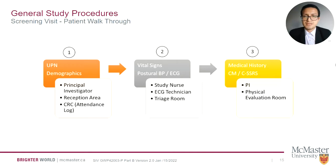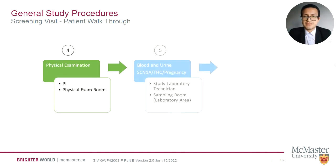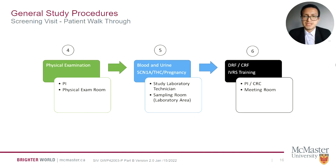After that, medical history, concomitant medication, and CSSRS will be performed by the principal investigator in the physical examination room. The PI will evaluate results against exclusion criteria before continuing. In the same room, the principal investigator will perform the physical examination. Then laboratory blood and urine samples, SCN1A tests, THC screen, and pregnancy tests will be performed by the study laboratory technician in the sampling room. Please ensure all non-invasive evaluations are done before performing invasive ones like blood testing. Finally, the CRC will gather all information to complete the DRF and CRF based on the source documents; the CRF should be completed within 5 days.